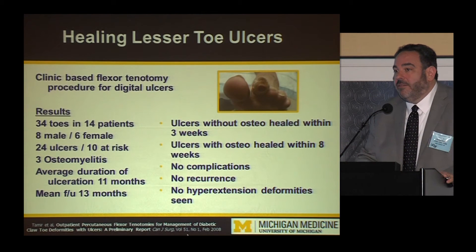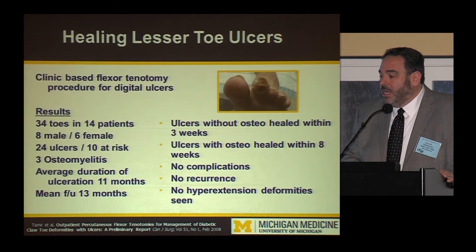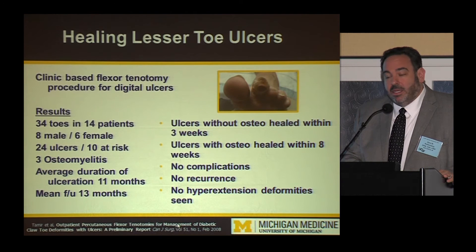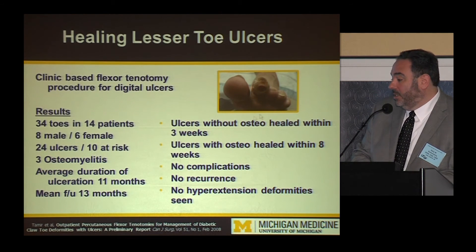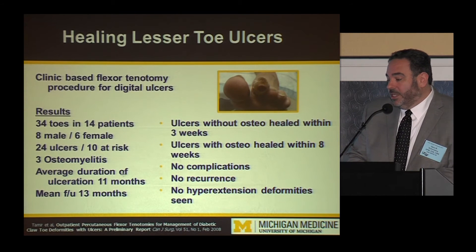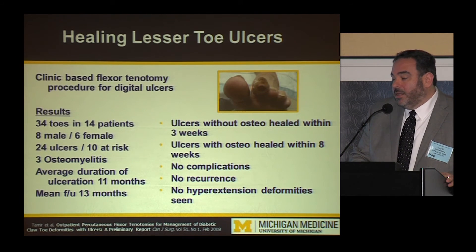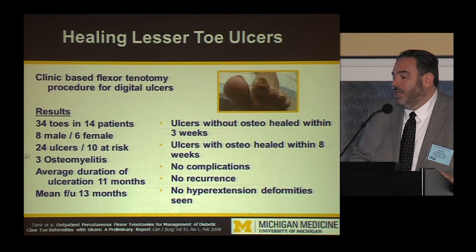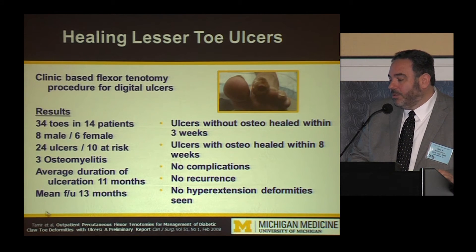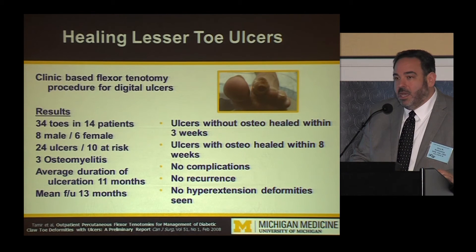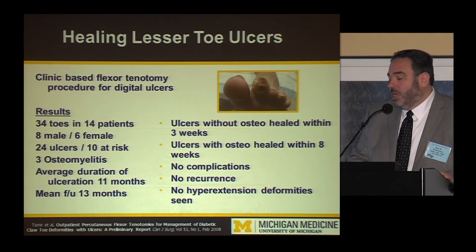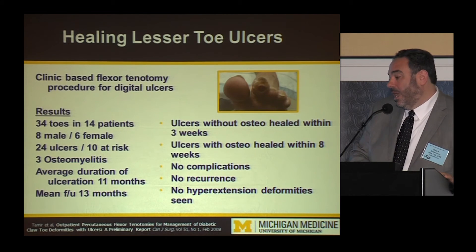There is solid evidence-based medicine for procedural management of wounds. A study out of Canada evaluated simple clinic-based flexor tenotomies for wounds at the tip of the toe. This study evaluated 34 patients — some with wounds and some at risk — so it was a combination of curative and prophylactic. Interestingly, they managed patients with osteomyelitis at the distal tip of the toe. They followed patients over a year and found that ulcers without osteomyelitis healed within three weeks, and those with osteomyelitis healed in eight weeks, with no real long-term complications.